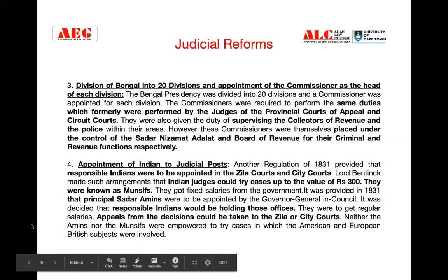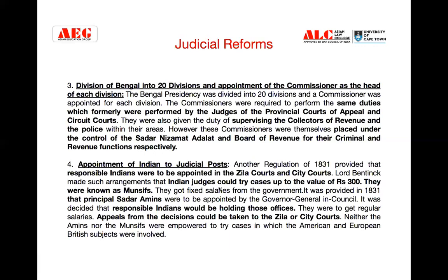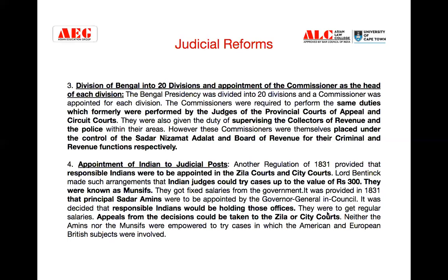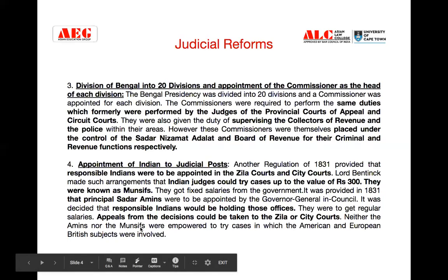But neither the Amins nor the Munsifs — these Indian officers — were empowered to try cases in which American, European, or British subjects were involved. So basically, Indians were appointed for judicial posts and given the posts of Munsifs and Amins, and they used to try cases up to Rs. 300. But they could only try cases where Indians were involved; wherever Europeans, Americans, or British were involved, they could not try those cases.